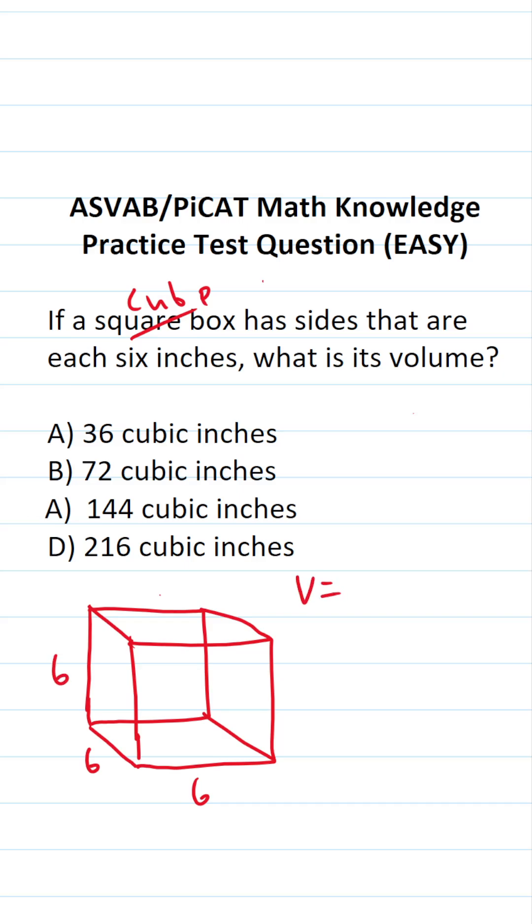How are we going to find the volume of a cube? We're going to take one of its sides and raise it to the third power. Again, we know one of its sides is six. So all we have to do is plug this value in and work it out accordingly.